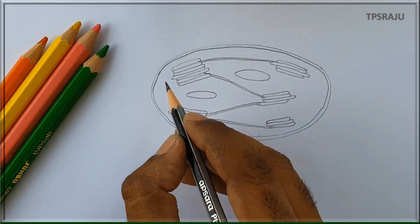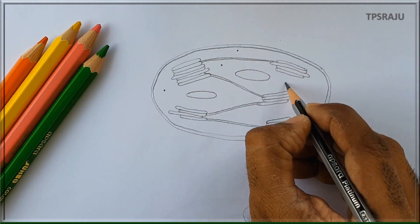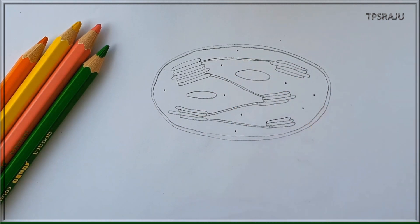Some starch granules and fat globules which are formed from photosynthesis also appear in the chloroplast.